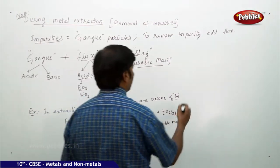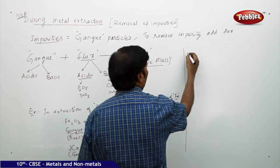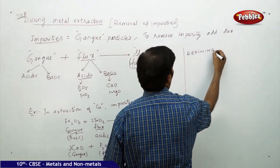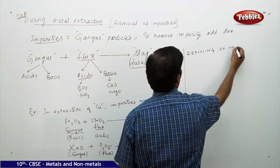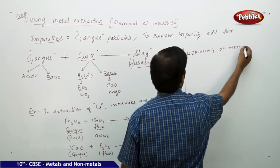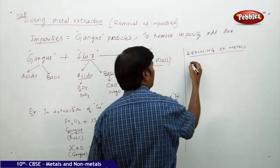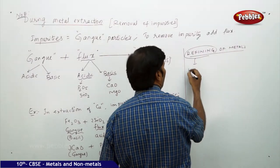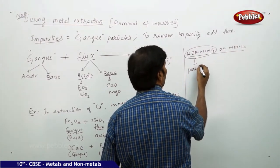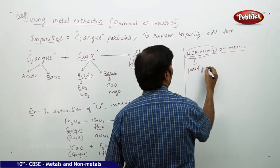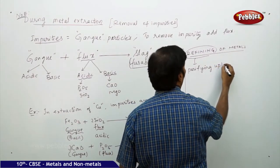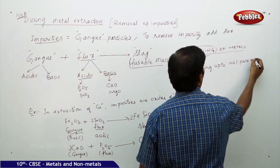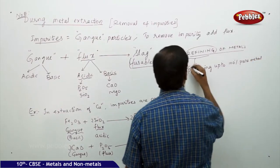Here, the final topic here is, after understanding this concept, refining of metals. In the refining of metals, why do we go for refining? Refining is bringing purifying, purifying up to 100% pure metal is one point.